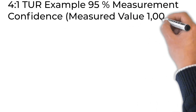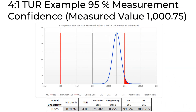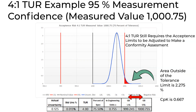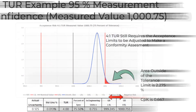Here's another 4-to-1 TUR example. We've moved the measured value in this scenario to 75% of the tolerance. This 4-to-1 TUR table shows that if we want to minimize our risk, we're going to need to shrink our acceptance limit to 75.5% of the tolerance. The area outside of the tolerance is 2.275% and CPK is 0.667. The overall measurement risk is less than 2.5%, and the probability of falsely accepting the measurement result is 2.275%. Most in metrology working with a 95% measurement confidence interval want to achieve a result with less than 2.5% single-sided risk.